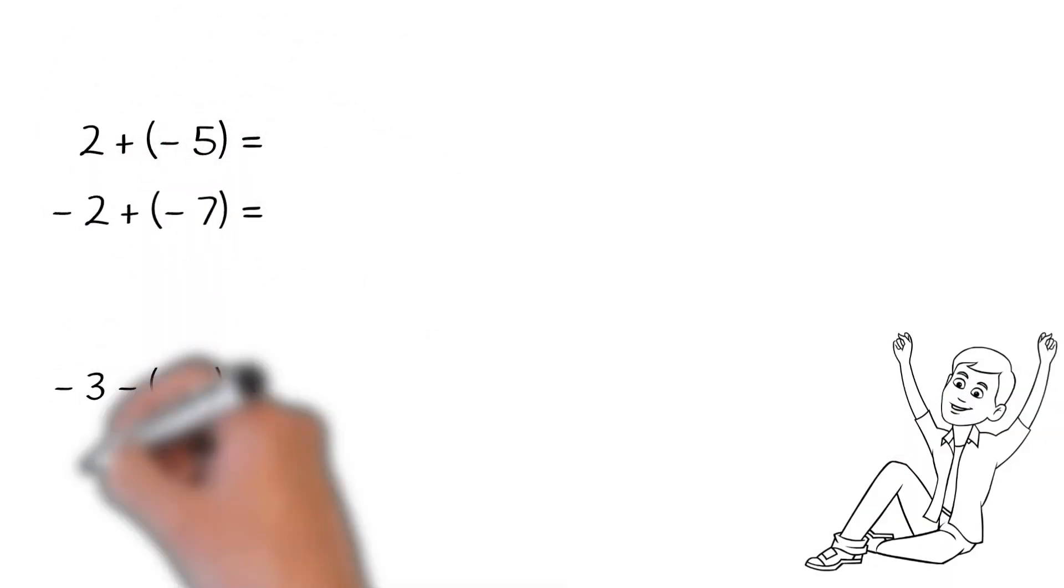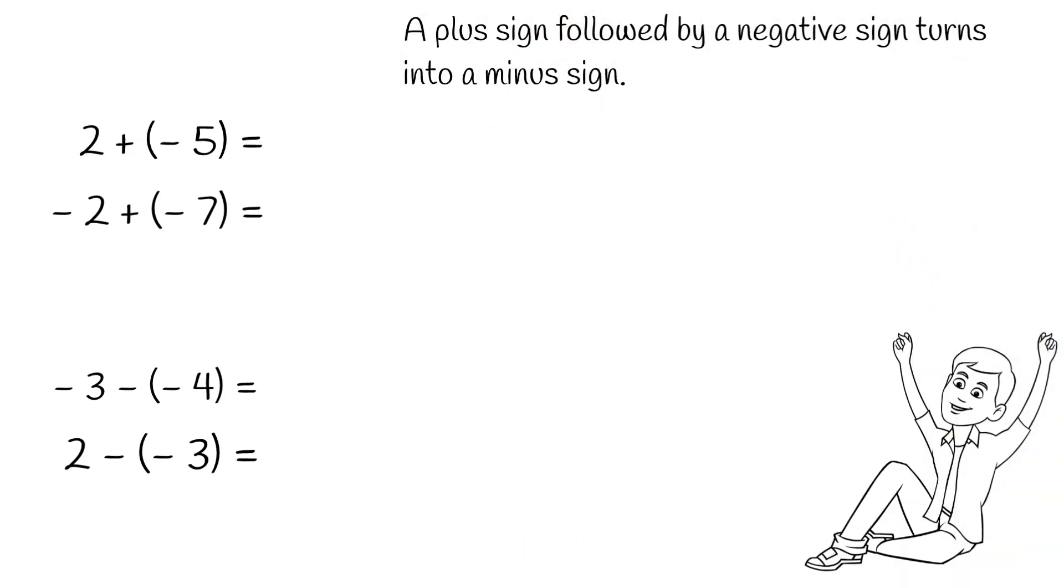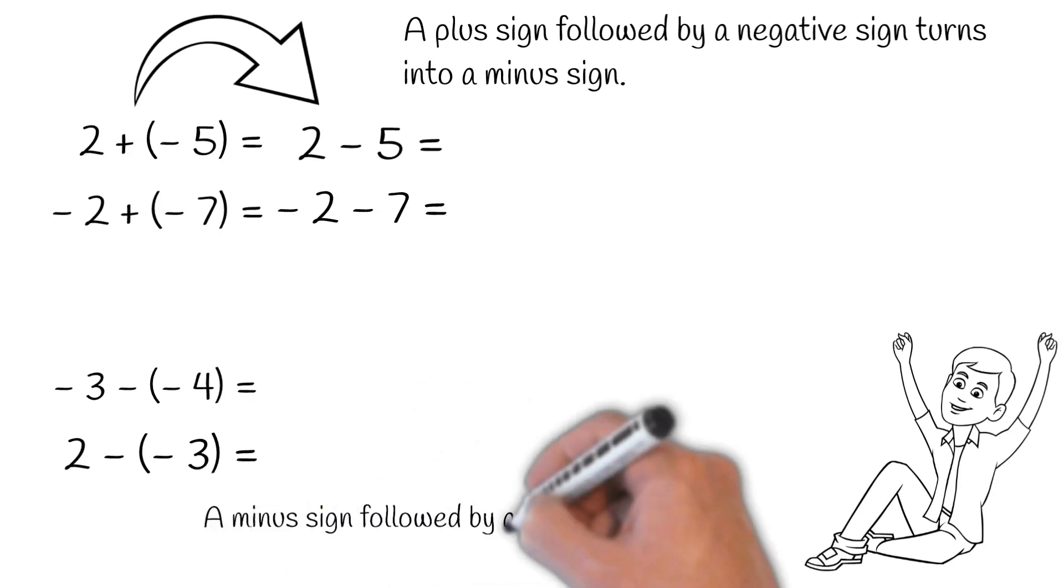Now you know the trick, and for it to be easier we make some rules to help you remember. Going back to our examples, when adding a negative integer, a plus sign followed by a negative sign turns into a minus sign.